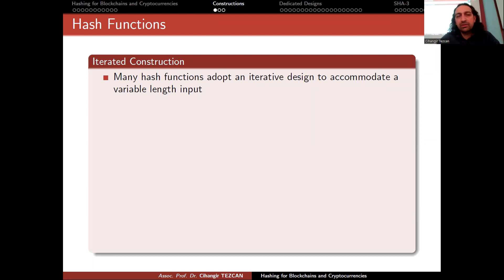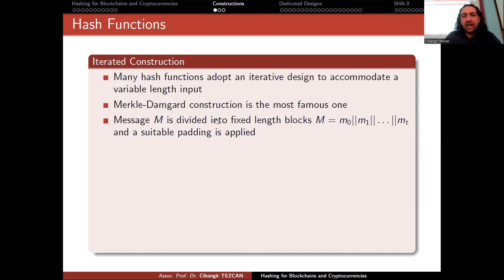So we have to see how we construct hash functions. Let's talk about iterated construction. Many hash functions adopt an iterative design to accommodate a variable length input. Merkle-Damgård construction is the most famous one. Message M is divided into fixed length blocks.